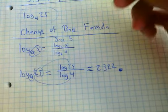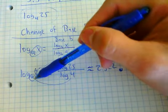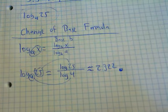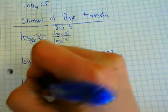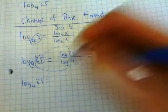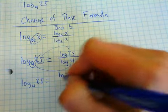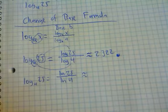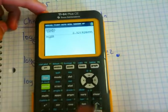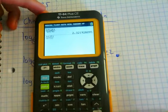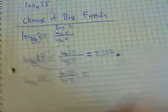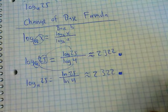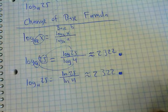That's how we use the change of base formula for bases not on the calculator. Now let's say we didn't use base 10 — could we use base E and get the same answer? Let's try it. Changing to base E makes this ln of 25 over ln of 4. Computing that on the calculator gives us the exact same answer: 2.322. So the change of base formula is really there to help you turn a logarithm into a base your calculator can handle.